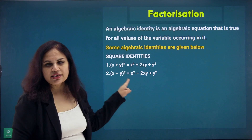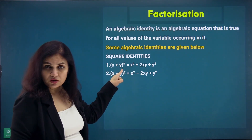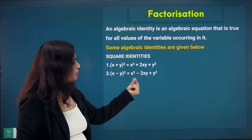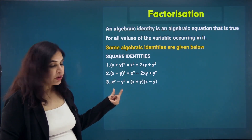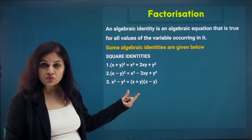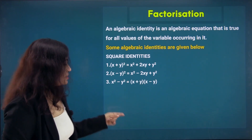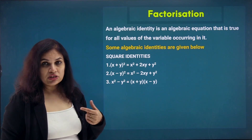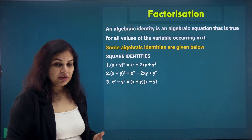The next square identity is (x−y)², which is the same as the first identity, except here y is a negative number, which makes the middle term 2xy negative, with the rest of the terms remaining the same. The third identity states that the difference between the squares of two numbers can be written as the product of the sum and the difference of the two numbers: x²−y² = (x+y)(x−y). These identities have great implications for simplifying calculations.